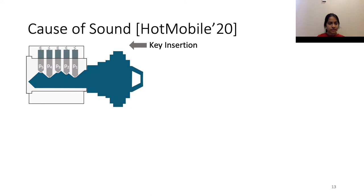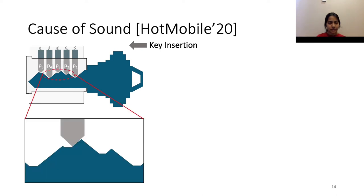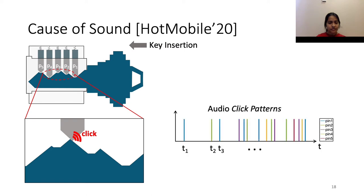We now explain the cause of key insertion sound, which we first reported in our prior work published at HotMobile 2020. If we take a closer look at the lock and key during key insertion, especially at the ridge and the pin, we see that whenever the pin falls off the ridge, it produces a sharp click sound. Because of the presence of multiple pins and ridges within the lock and key, during key insertion, a click pattern emerges. Here, the times t1, t2, t3, and so on indicate the time at which the different clicks occur, and it is in fact the time interval between these clicks that carries information about the key secret, or the key's bittings.